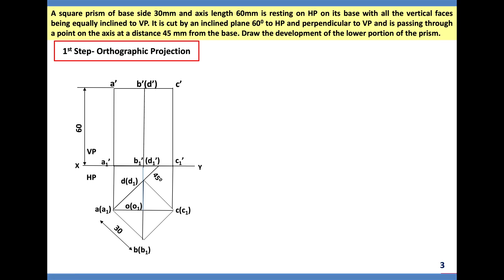Both front view and top view are drawn in thin line or projection line, so that once we introduce the cutting plane, the retained portion is made thick and the removable portion stays thin. Now introduce the cutting plane at a distance of 45 mm from the base. Total height is 60 mm, so from the top I measure 15 mm (60 − 45 = 15). Draw a horizontal line at that point — where it meets the axis, take the protractor, measure 60 degrees to HP, and introduce the cutting plane using the standard convention for section plane.